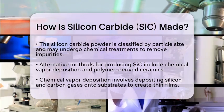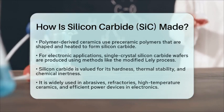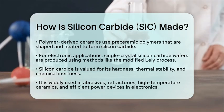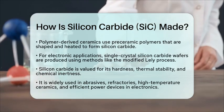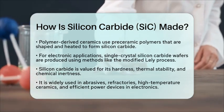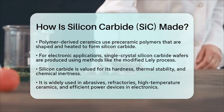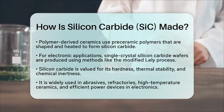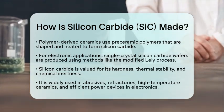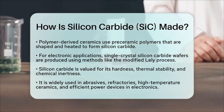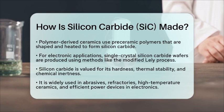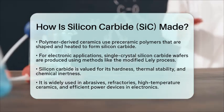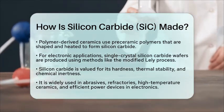For applications in electronics, single crystal silicon carbide wafers are produced using methods like the modified Lely process or physical vapor transport. These techniques involve sublimation and recrystallization at high temperatures to form large, defect-free crystals, which are then sliced into wafers.